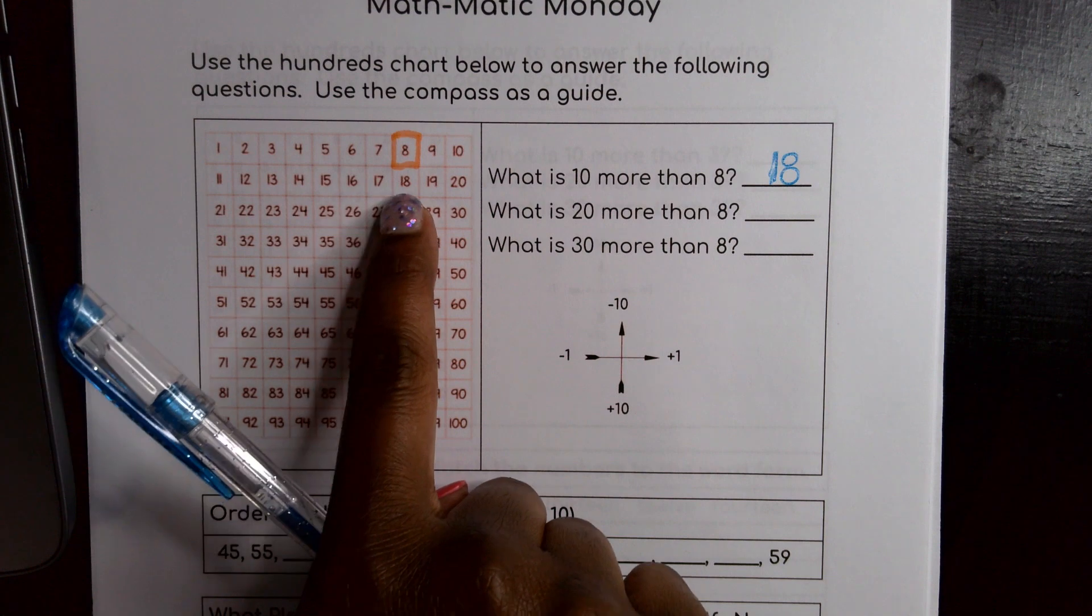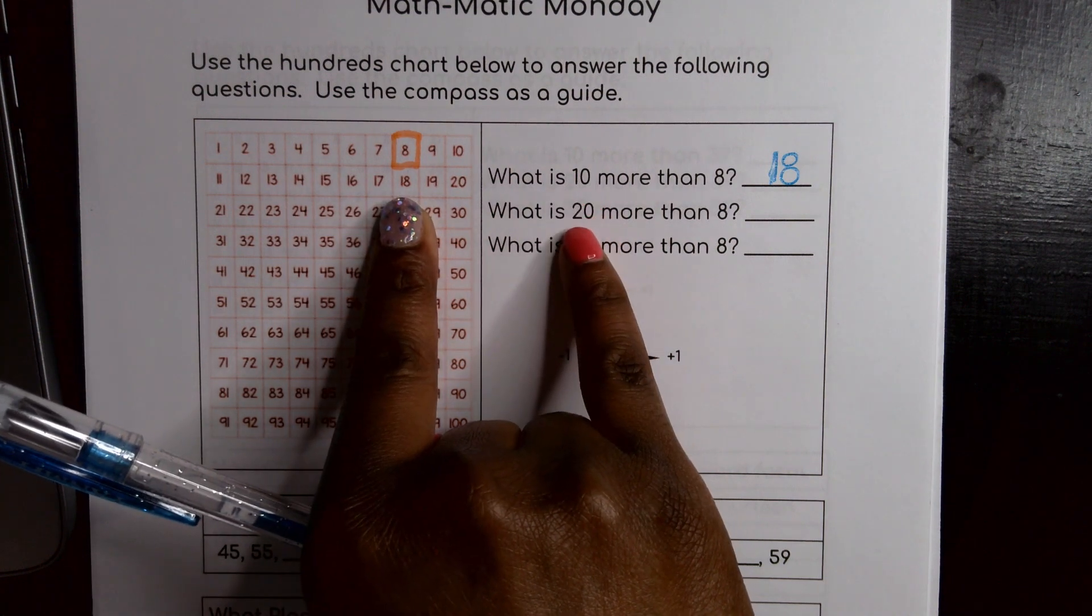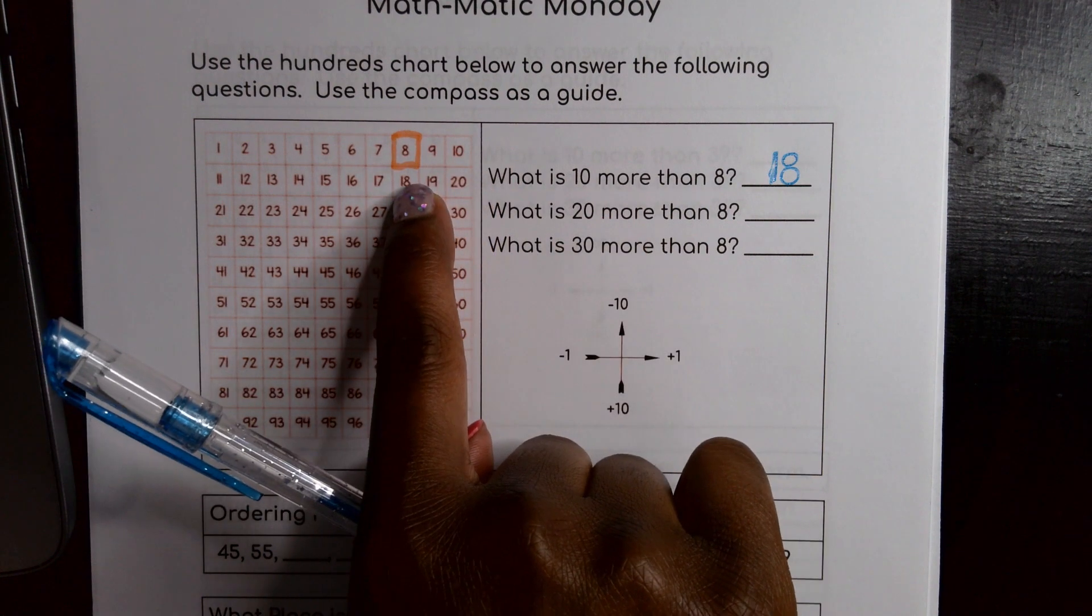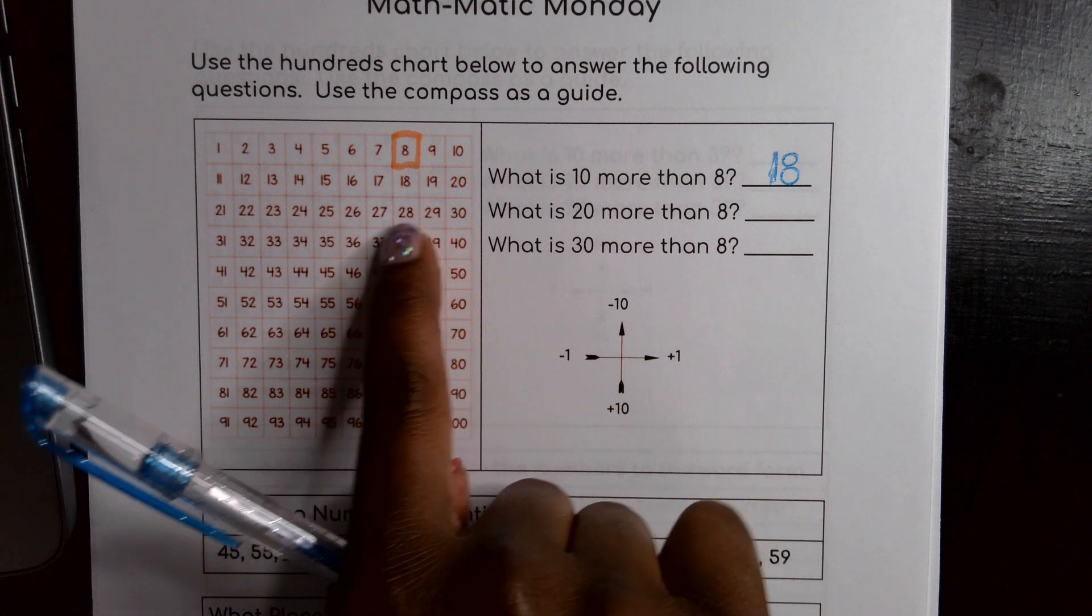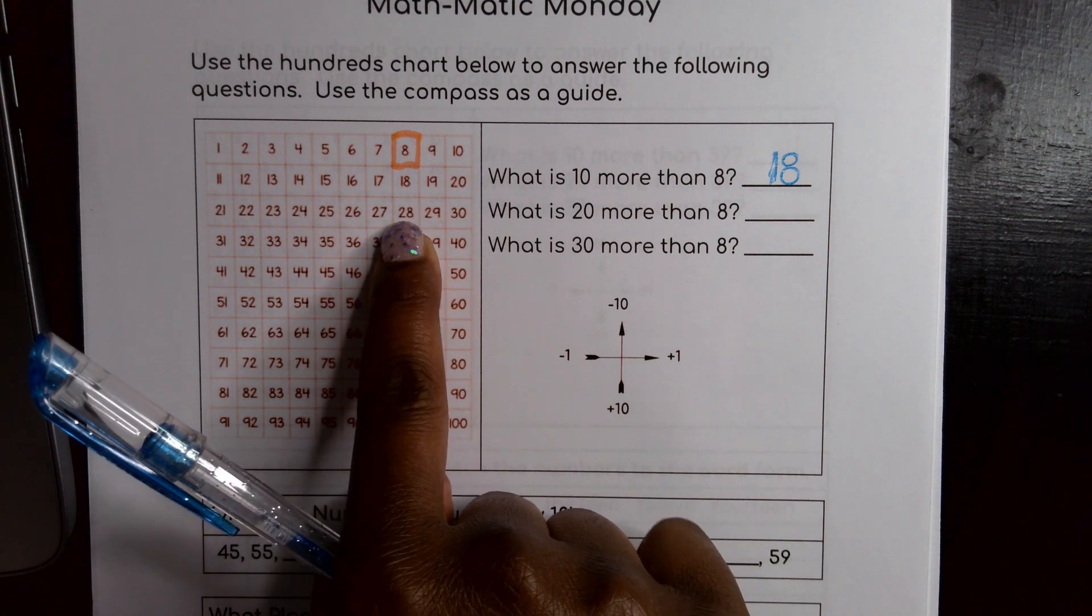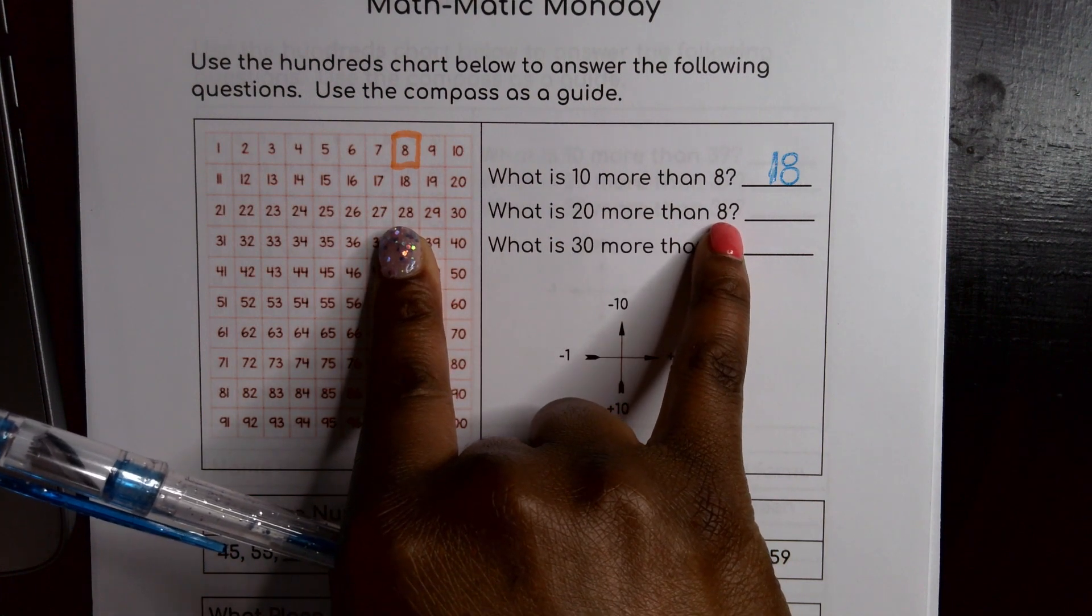Now that's 10 more. This one is asking me for 20 more. So that means I have to start back at that 8. Go down 10 and go down 10 more. There's 28. Which makes sense because 20 plus 8 would give me 28.